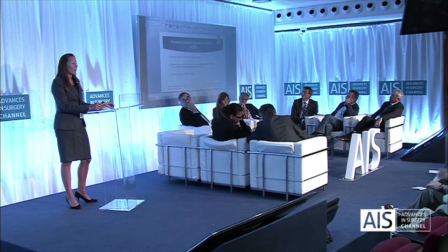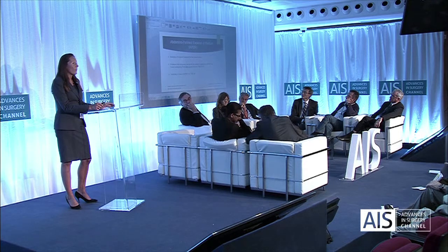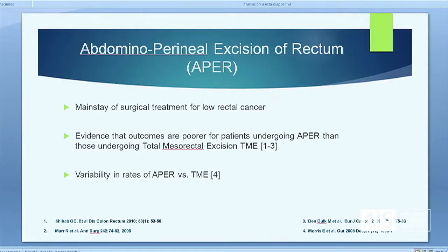There's been evidence in the literature that outcomes are poorer for patients undergoing an AP rather than a TME, and that's caused concern. There has also been variability in the rates of AP resections. A paper from Morris et al. from the UK found variability in rates depending on patients being from deprived areas and surgeons with low caseload of rectal cancer cases, who had a tendency to perform more APs than national guidelines recommended.